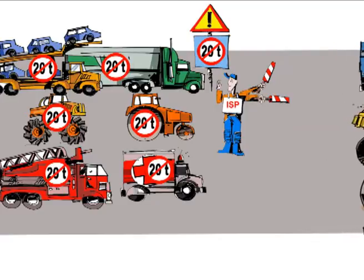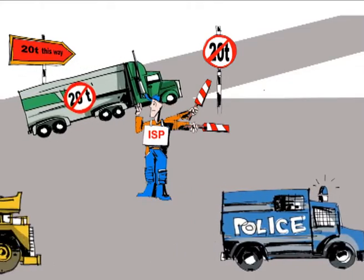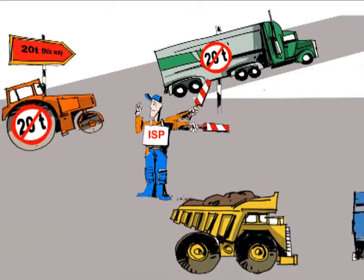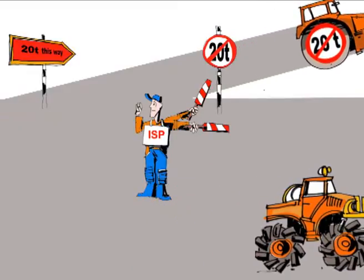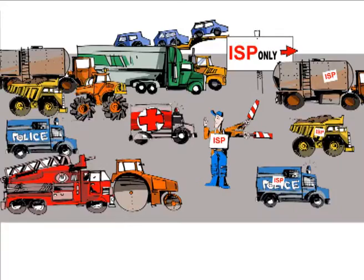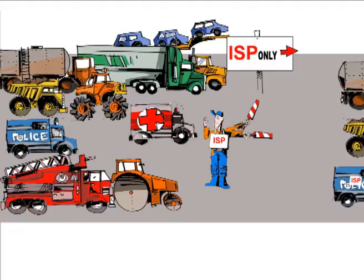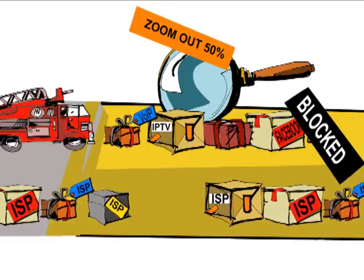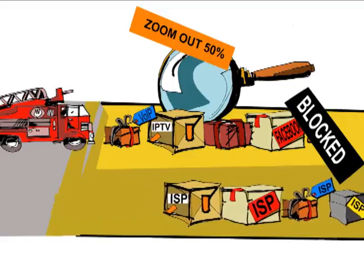Prioritising data packages does improve the traffic flow, assuring the quality of the service, but it also raises concerns among the users. What if internet service providers decide to prioritise certain data packages for their own interests, thus introducing anti-competitive practices?